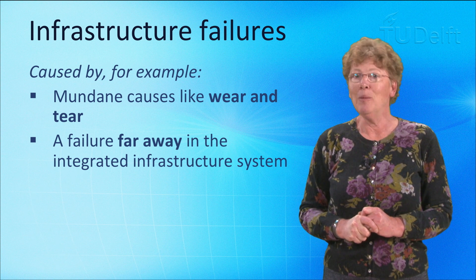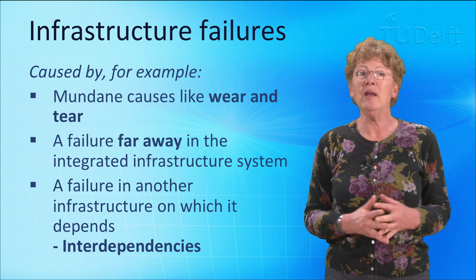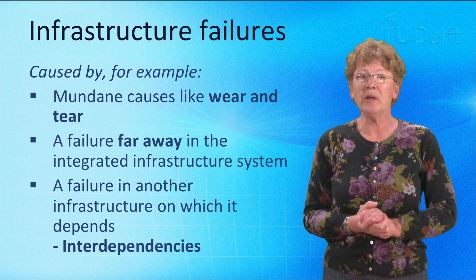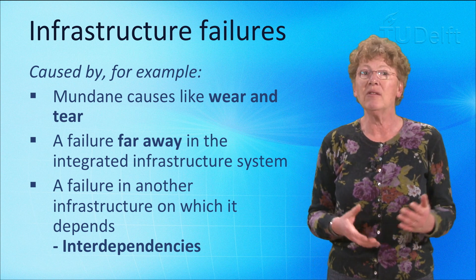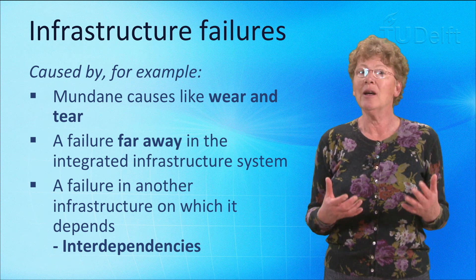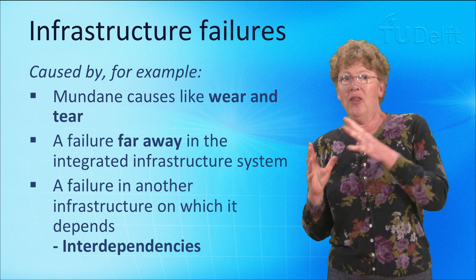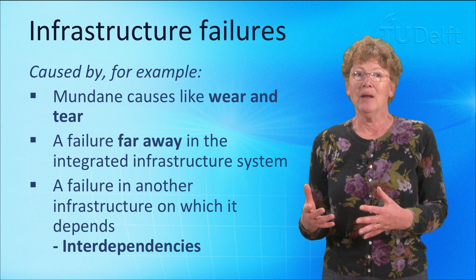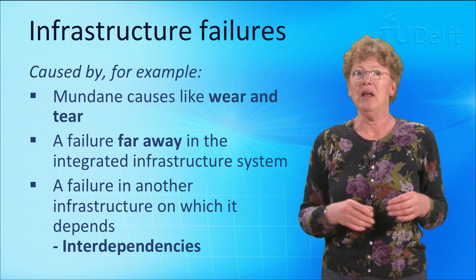And to further complicate matters, failures may also originate from other infrastructure systems, which is because today's infrastructure systems are largely interdependent. For example, drinking water infrastructure needs electricity to power its pumps. Continental electricity infrastructure needs telecom and information infrastructure, because without that, essential information on the state of the network cannot be shared between the national transmission system operators. Then, mobile telecommunication infrastructure critically depends on electricity. In other words, we are dealing with a system of interdependent infrastructure systems.